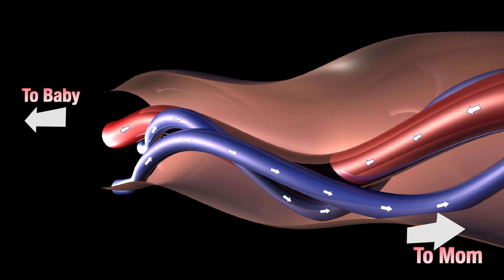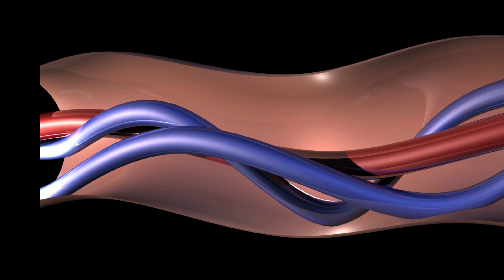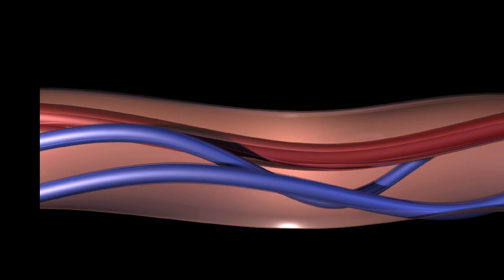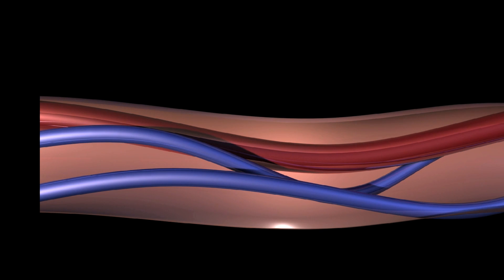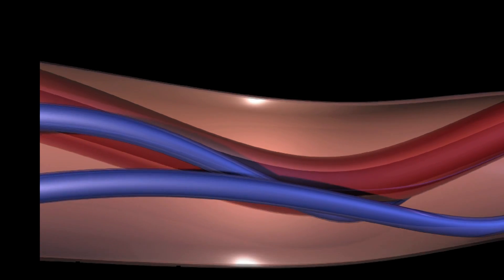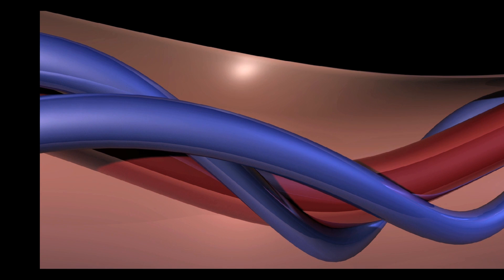So typically with cord compression, the vein is compressed first, which causes a sympathetic response in the baby's heart rate, causing that fight-or-flight reaction, which accelerates the heart rate. And that's what causes the initial shoulder prior to the deceleration. And then baroreceptors kick in, and that's what drops the heart rate down. And then once the pressure is released off the umbilical cord, the heart rate accelerates again before it returns to the baseline.